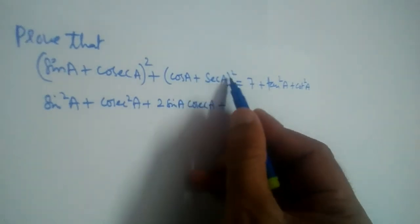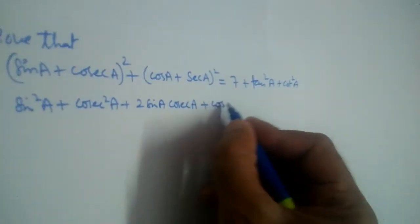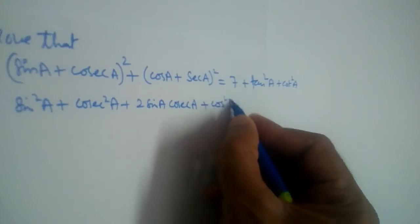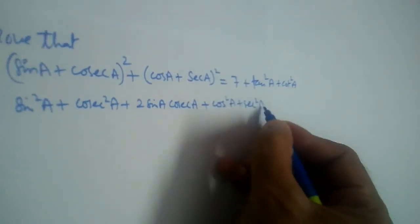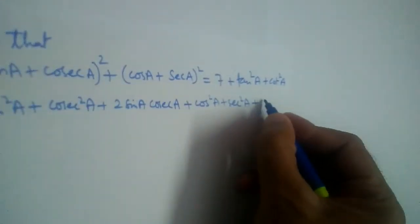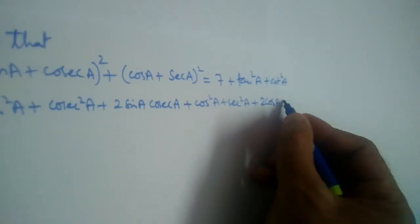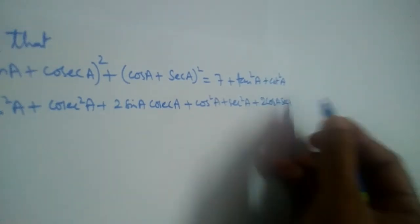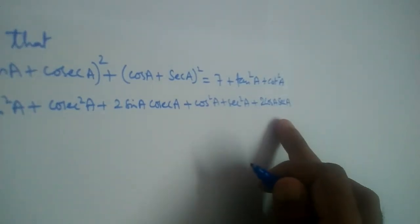For the second bracket, use (a + b)² and expand. We get cos²a + sec²a + 2·cos a·sec a.